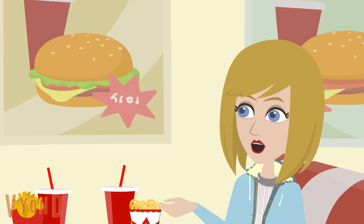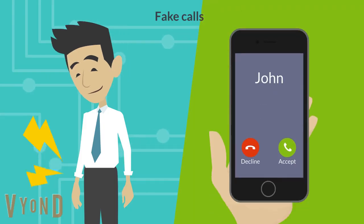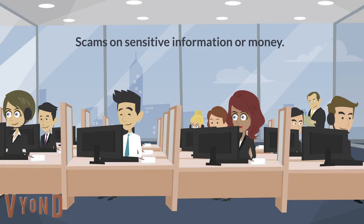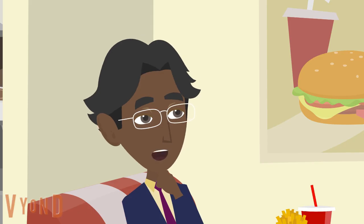Impersonation is when attackers pretend to be someone they're not, such as a bank employee, a police officer, a tech support representative, or a family member, to make people share sensitive information or send money.